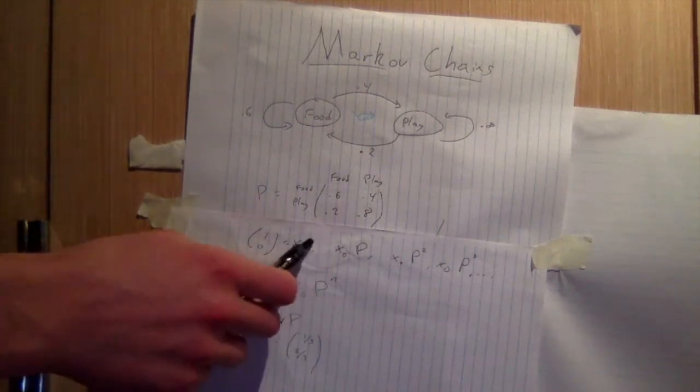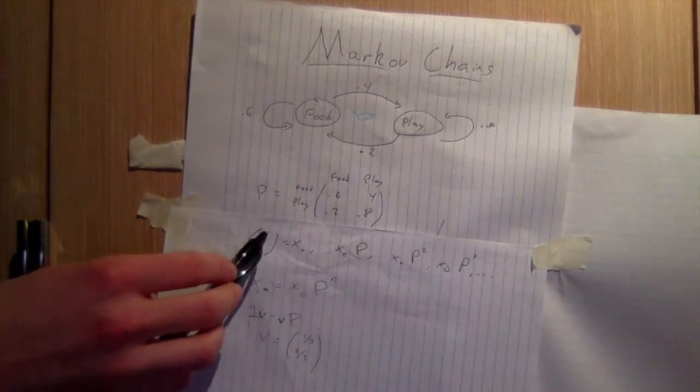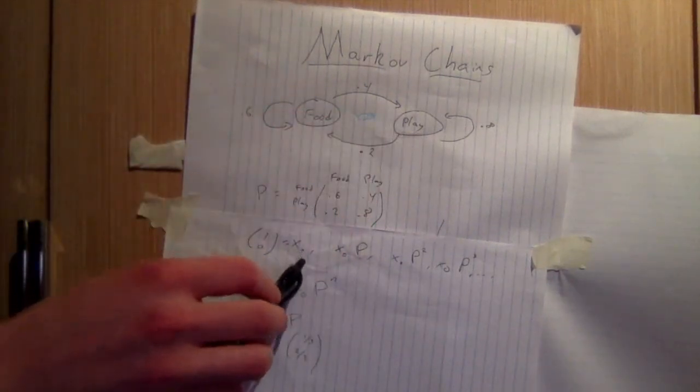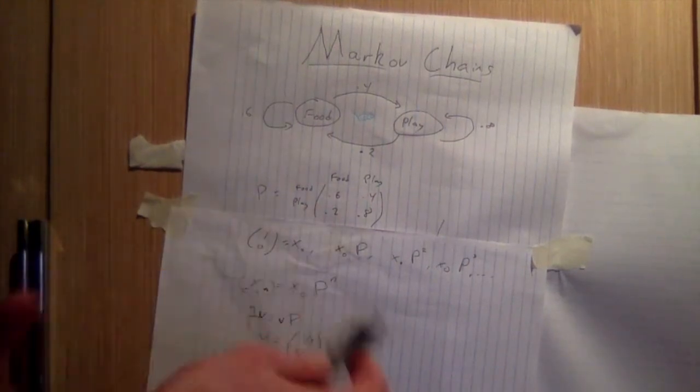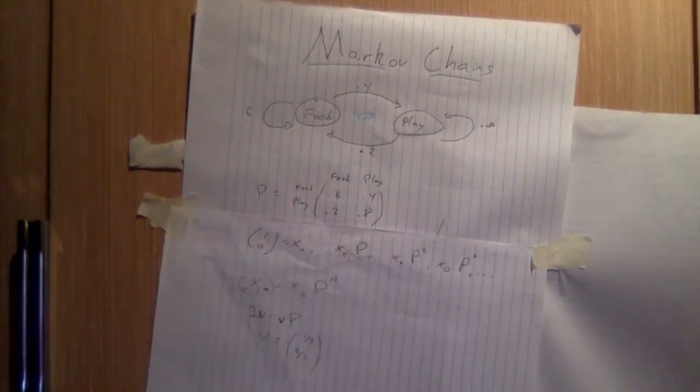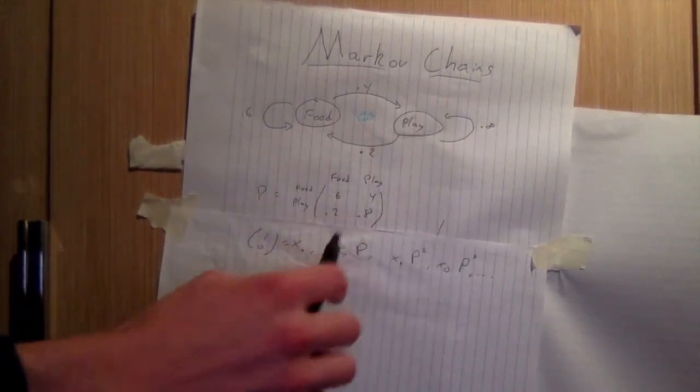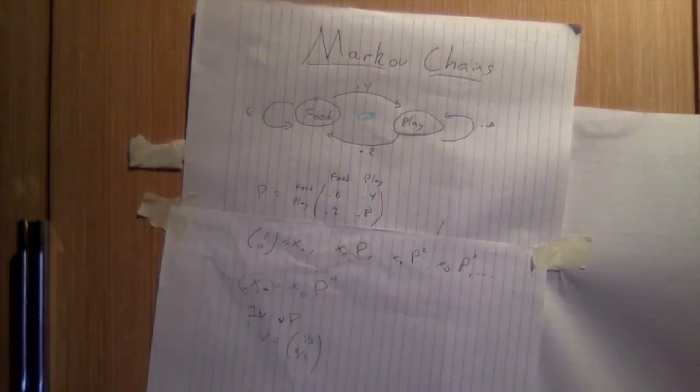So specifically, let's say you start at x0, which here is starting at food, so all the mass is concentrated at food and 0 at play. The distribution of the next time step is actually given by x0 hit with this matrix P on the right. And then in the third time step it's given by this thing hit with P, which is just the original x0 hit with P squared.